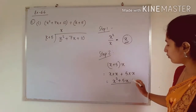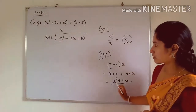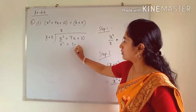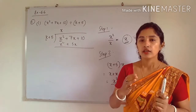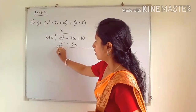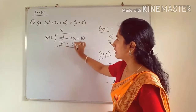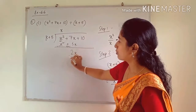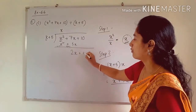The algebraic expression from step 2 is written below the dividend, collecting like terms: x² below x², and 5x below 7x. We draw a horizontal line and subtract, just as in normal division. x² − x² = 0, and 7x − 5x = 2x. We bring down the 10, giving us a new dividend of 2x + 10.